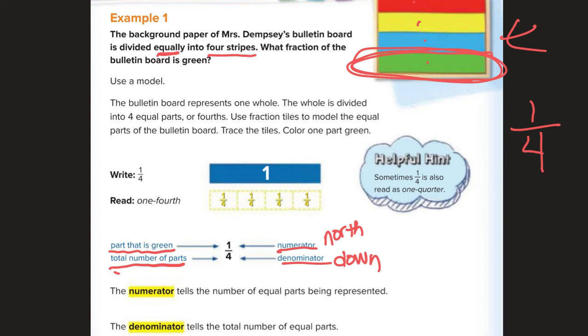So, one-fourth, or one, ooh, we have to spell it, F-O-U-R-T-H, of the bulletin board is green.